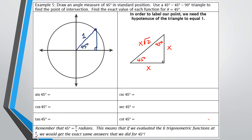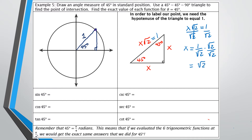The catch is I need the hypotenuse to equal 1. So I set x√2 equal to 1 and divide by √2, getting x = 1/√2. We can't leave a radical in the denominator, so we rationalize by multiplying by √2/√2. That gives √2/2. So the two other sides of the triangle each equal √2/2.